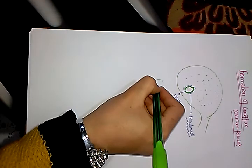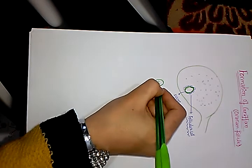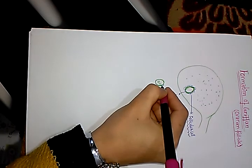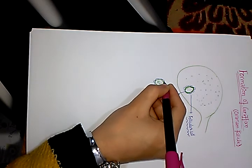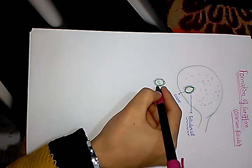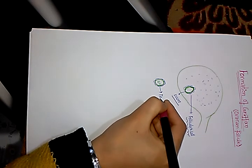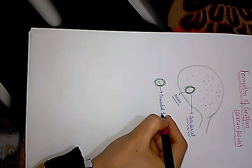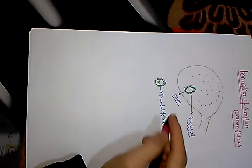Some of these follicular cells become flat and surround the ovum. These stromal cells together with the ovum are called the primordial follicle. So what is the primordial follicle? The primordial follicle is nothing but the oocyte surrounded by flat cells.